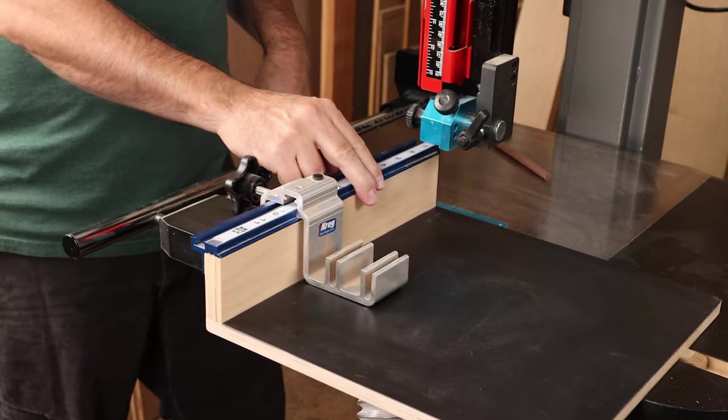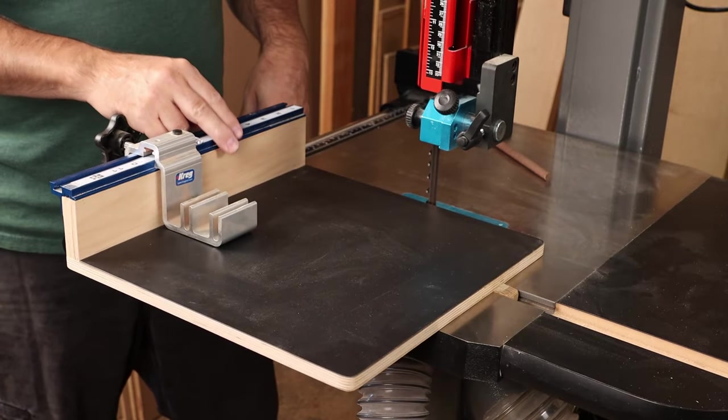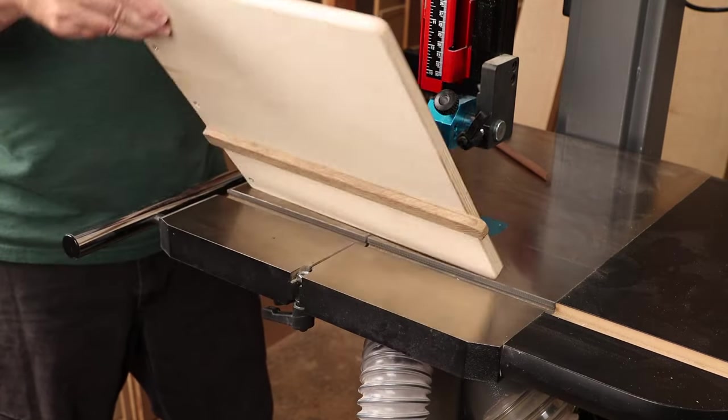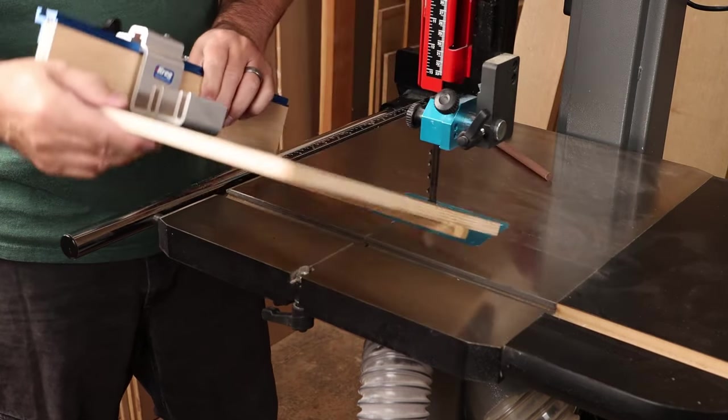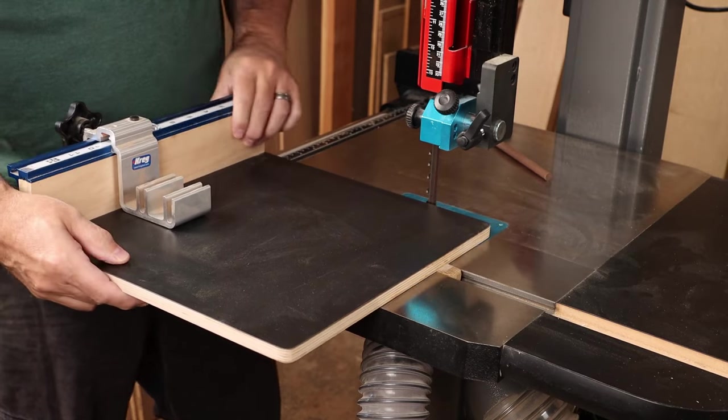And this sled has all the same components that you might find on a larger version at the table saw, just on a much smaller scale. In this case, there's a wooden miter bar runner, a little bit of paste wax will keep that sliding well in the track.